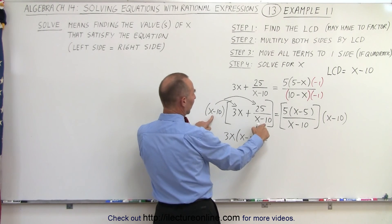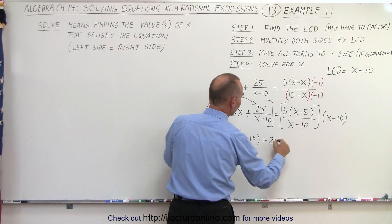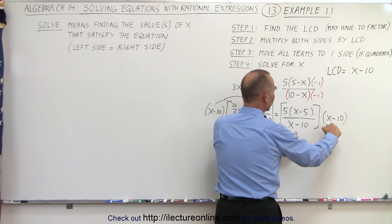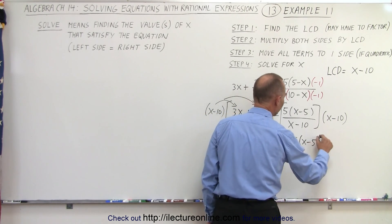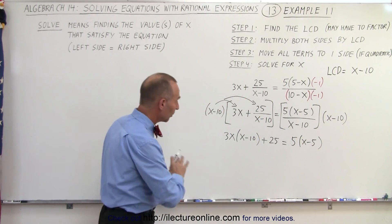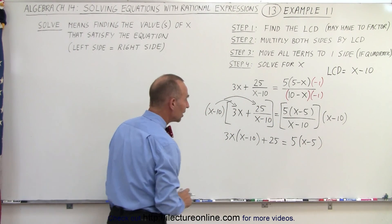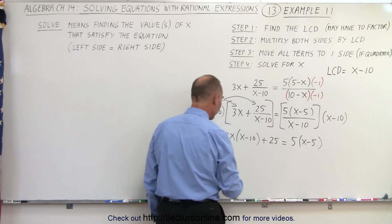now here the x minus 10s cancel out, so I'm left with just the 25, equals, and again the x minus 10 cancels out, so I'm left with 5 times x minus 5. Now I do need to multiply everything through to get rid of the parentheses.